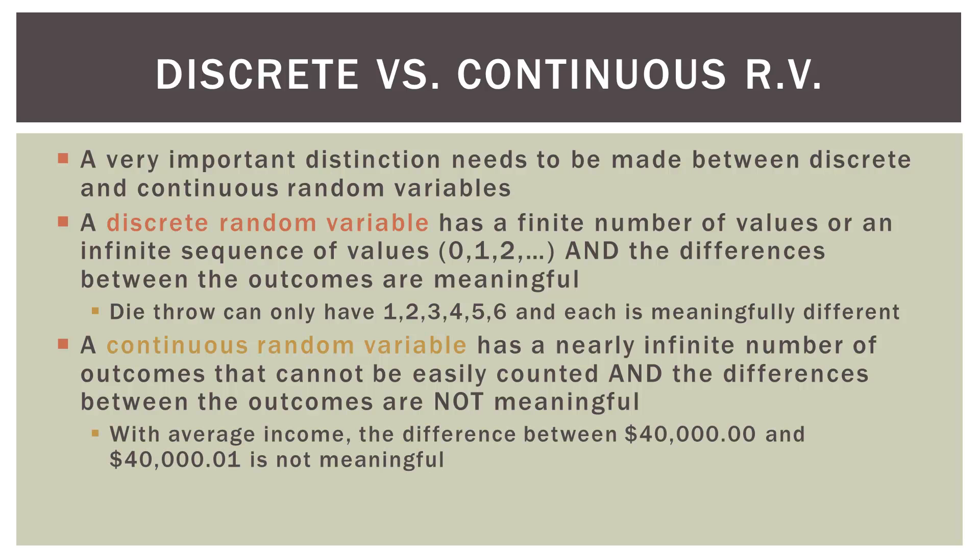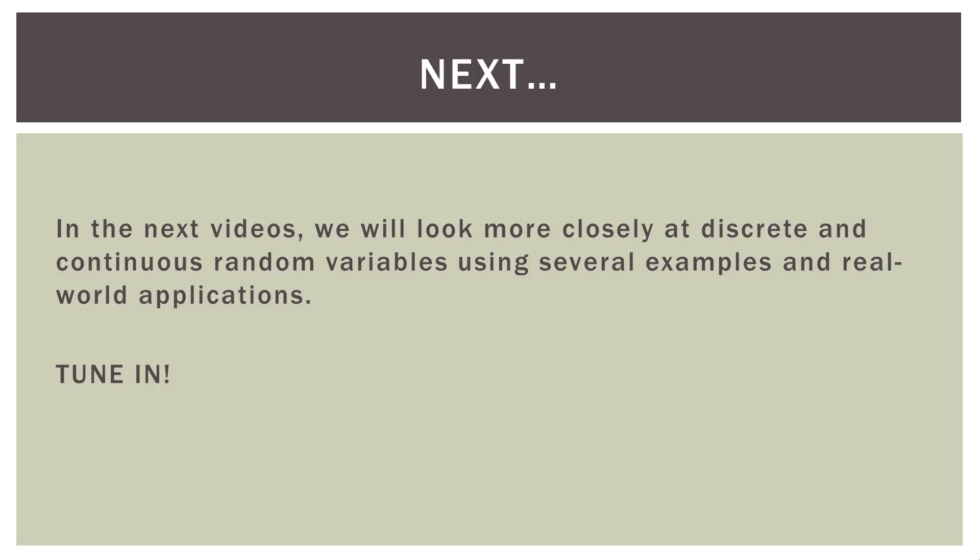And the differences between the outcomes are not really that meaningful. What I mean by that, let's say the average income, the difference between $40,000 even and $40,000 and one cent is not really that meaningful. And they are part of a huge number of possible outcomes for our average income.